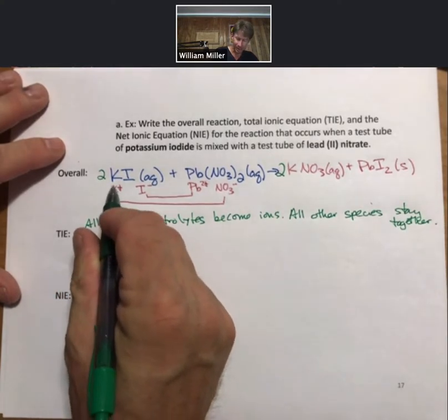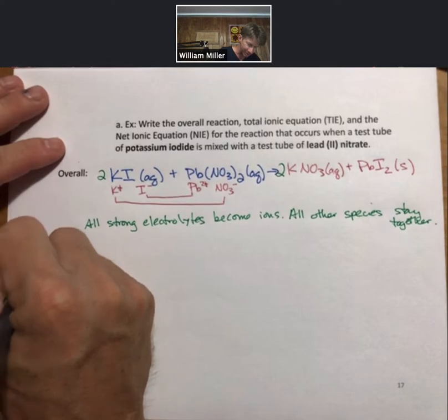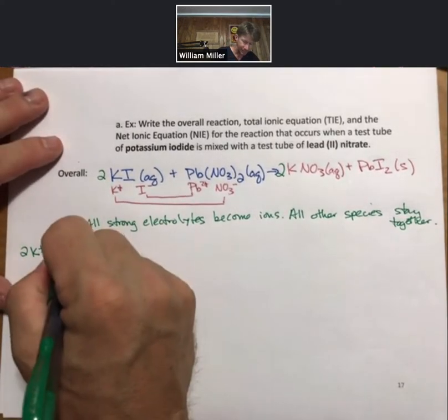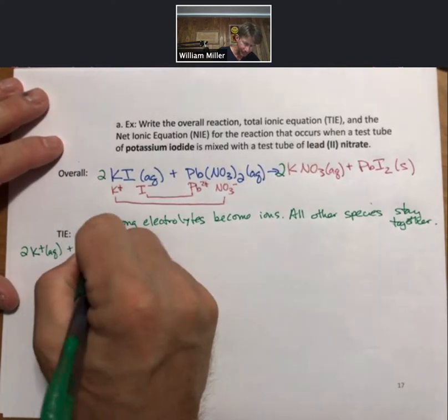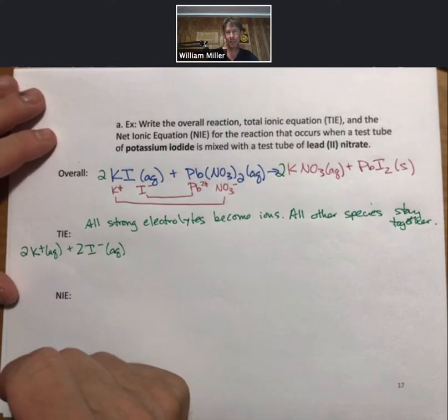As we bring this down, this is going to be 2K plus, and I'm going to start all the way over here because this is a long one, 2K plus plus 2I minus. Those are both aqueous.